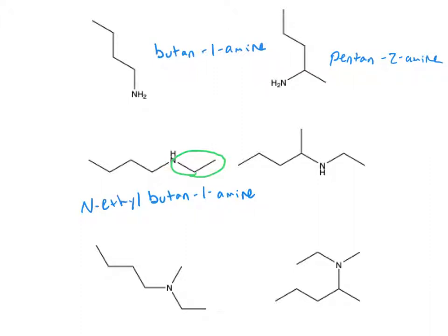In our next example, we once again have five carbons, so we're going to have pentan-2-amine, since our nitrogen is attached to our second carbon. But again, we have that same ethyl group also attached to our nitrogen. And so we're going to name this one N-ethyl-pentan-2-amine.